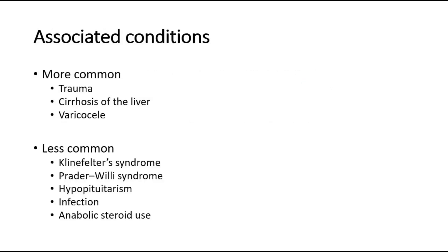These are some of the possible conditions associated with testicular atrophy. The more common ones are trauma, cirrhosis of liver, and varicocele. Other less common conditions include Klinefelter's syndrome, Prader-Willi syndrome, hypopituitarism, infection, or anabolic steroid use.